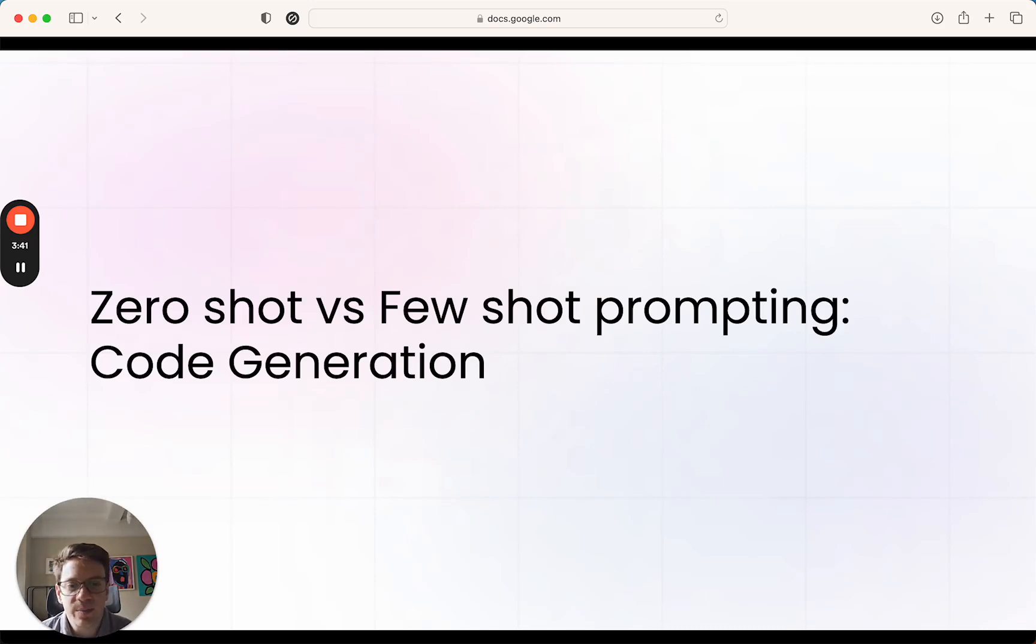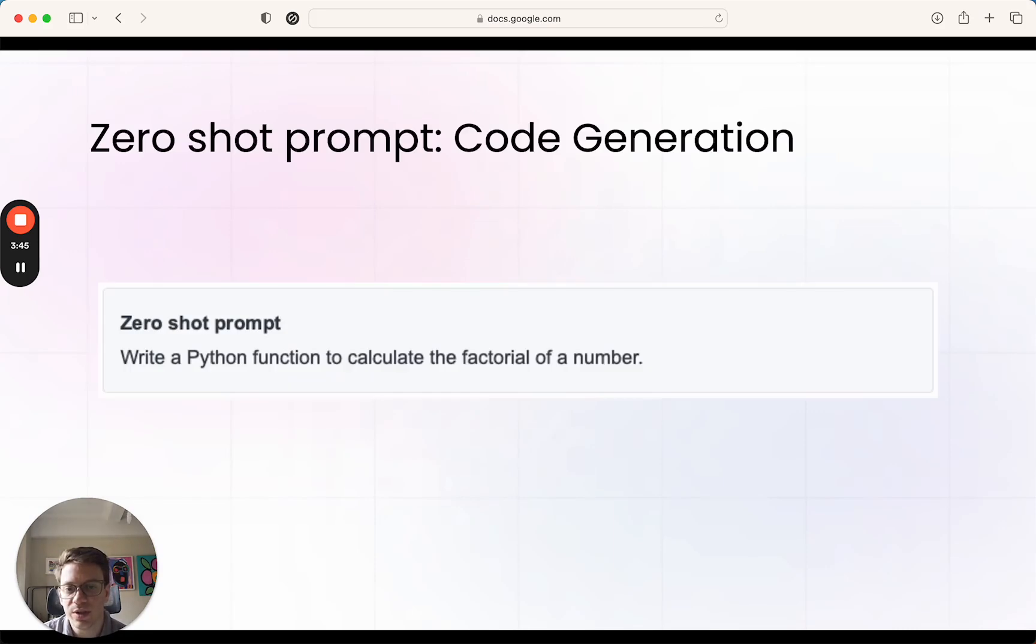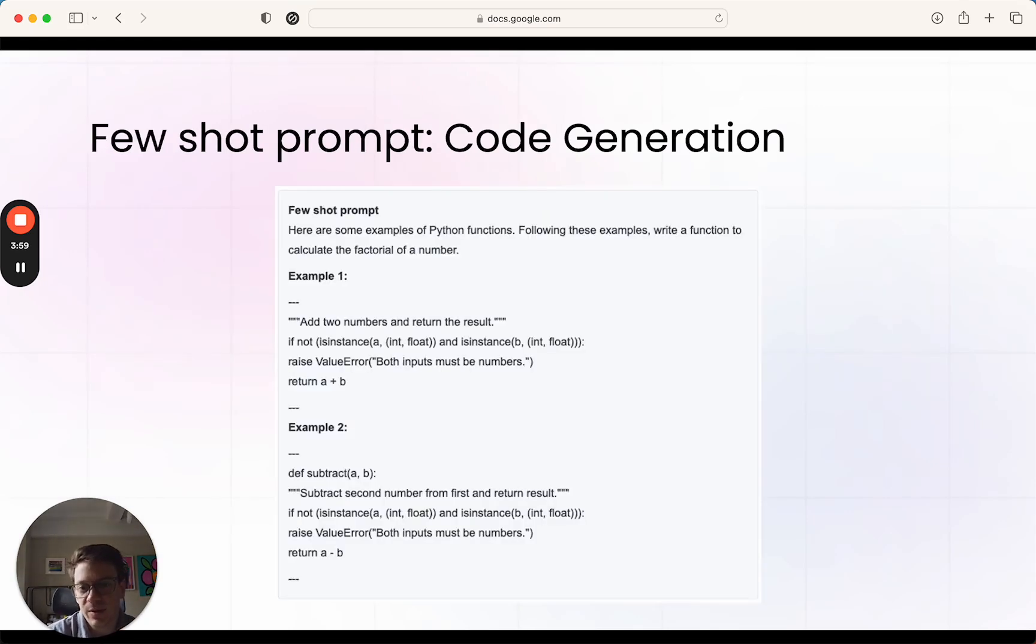Let's look at a quick example of zero-shot versus few-shot in regard to code generation. We'll do a pretty simple one. We're having OpenAI GPT-3.5 write a Python function to calculate the factorial of a number. That would be the zero-shot prompt. Here is the more built-out few-shot prompt, where we send the same instructions but then we have a few examples of other Python functions that we've either created or ChatGPT created as well.